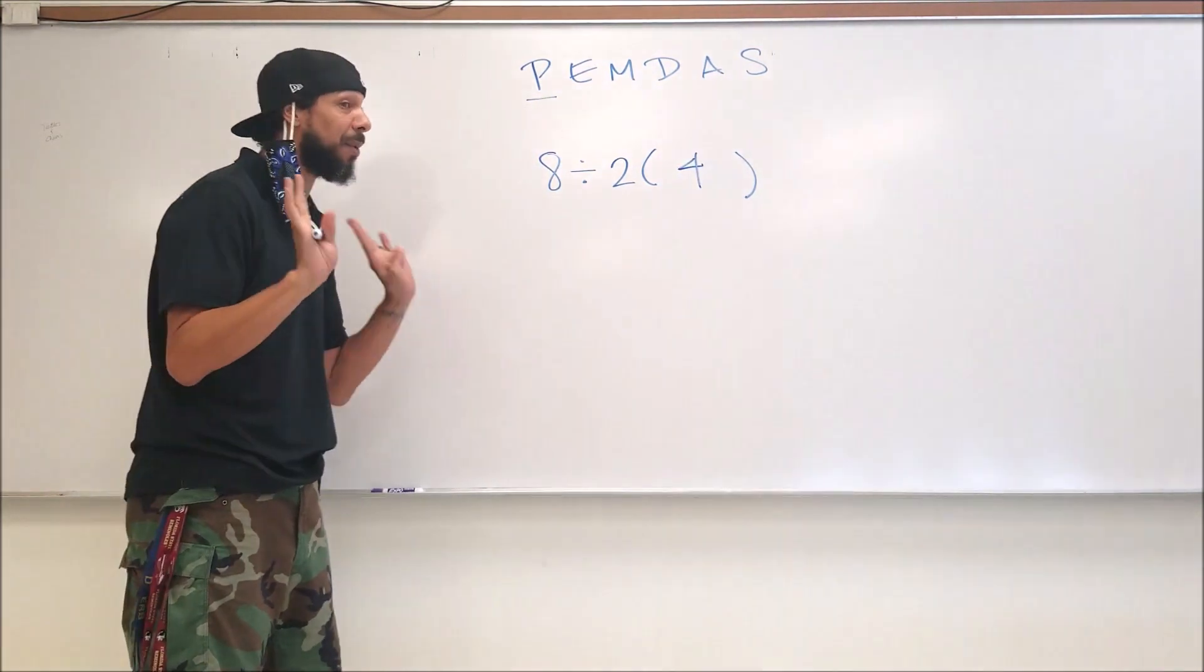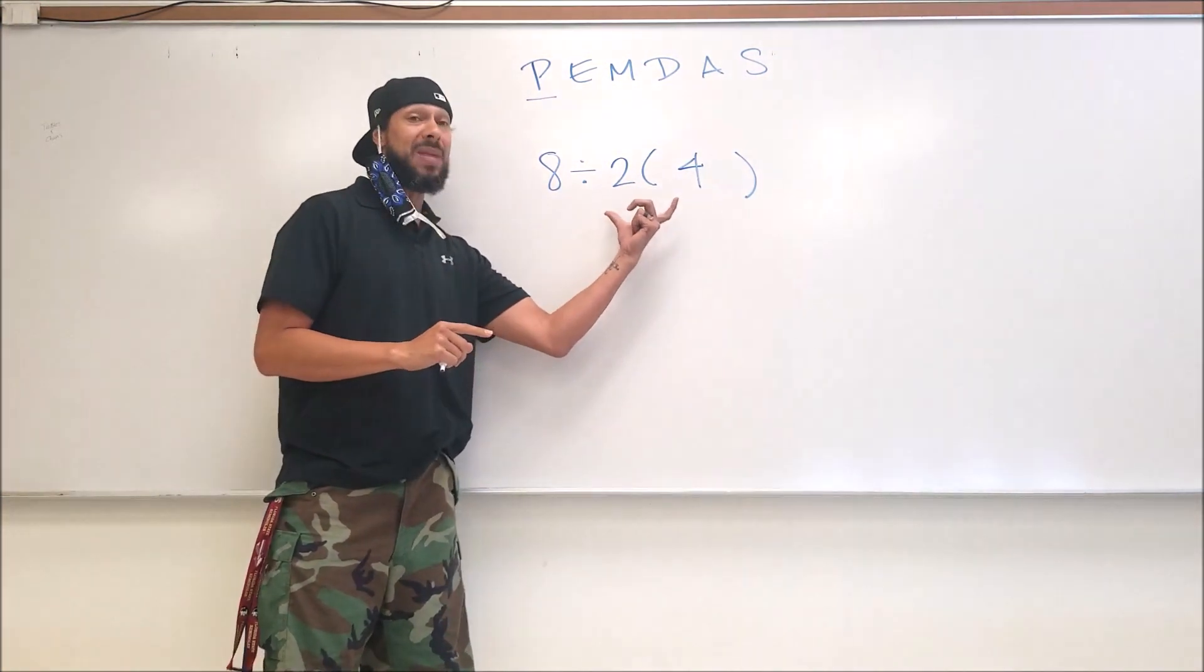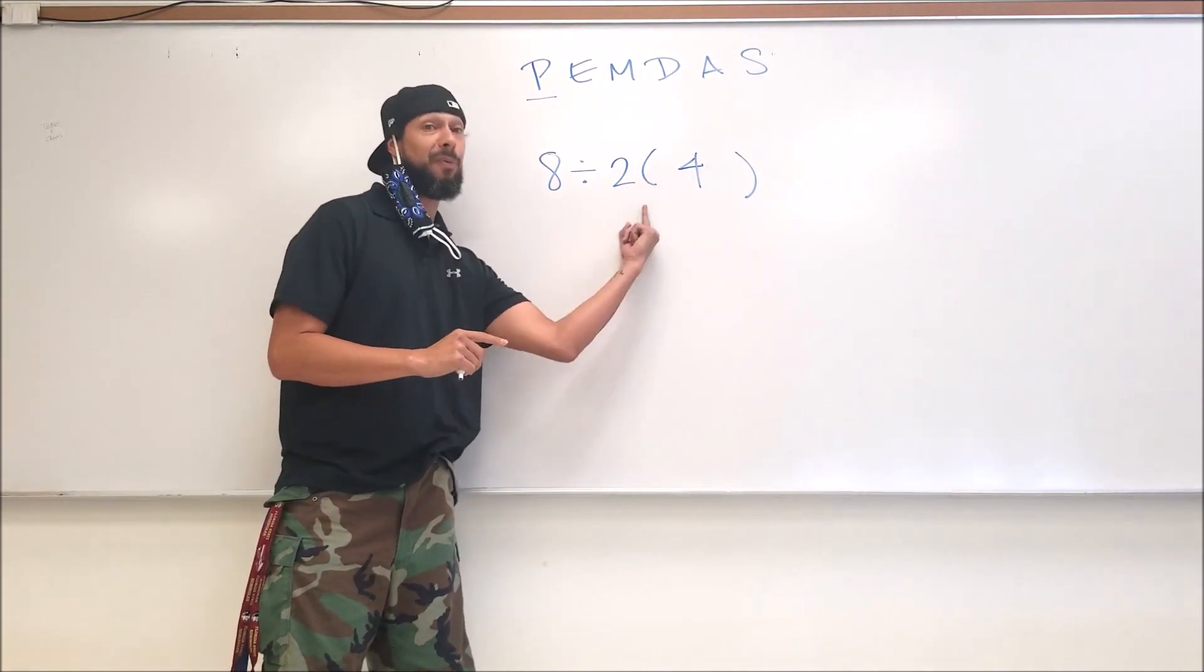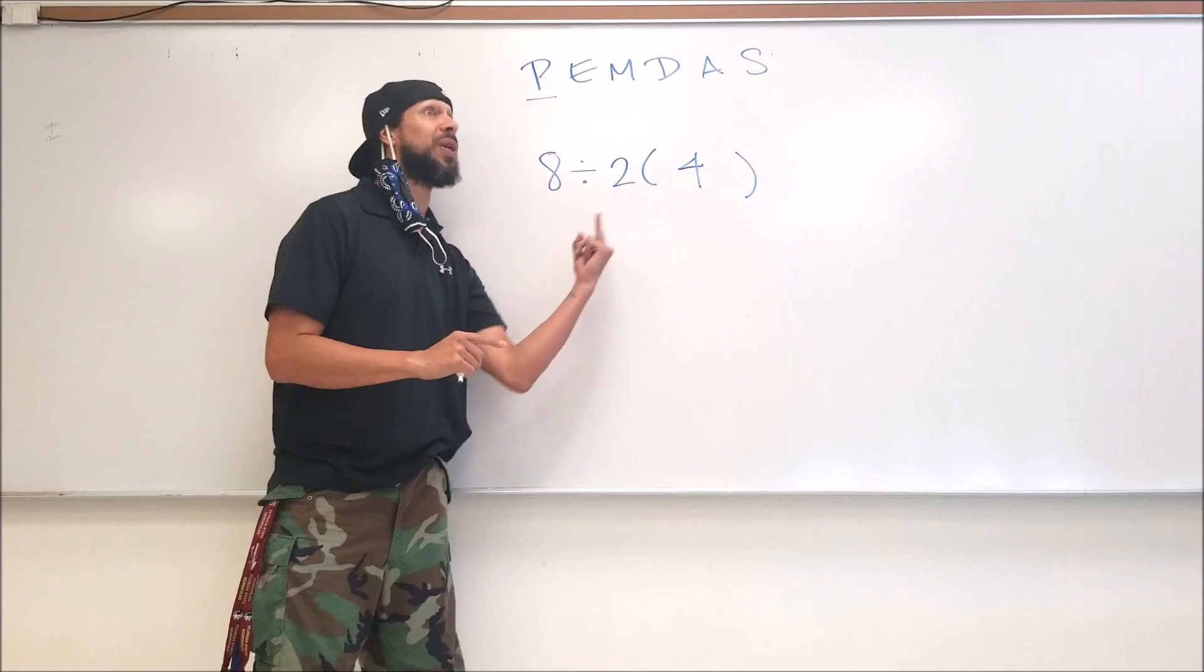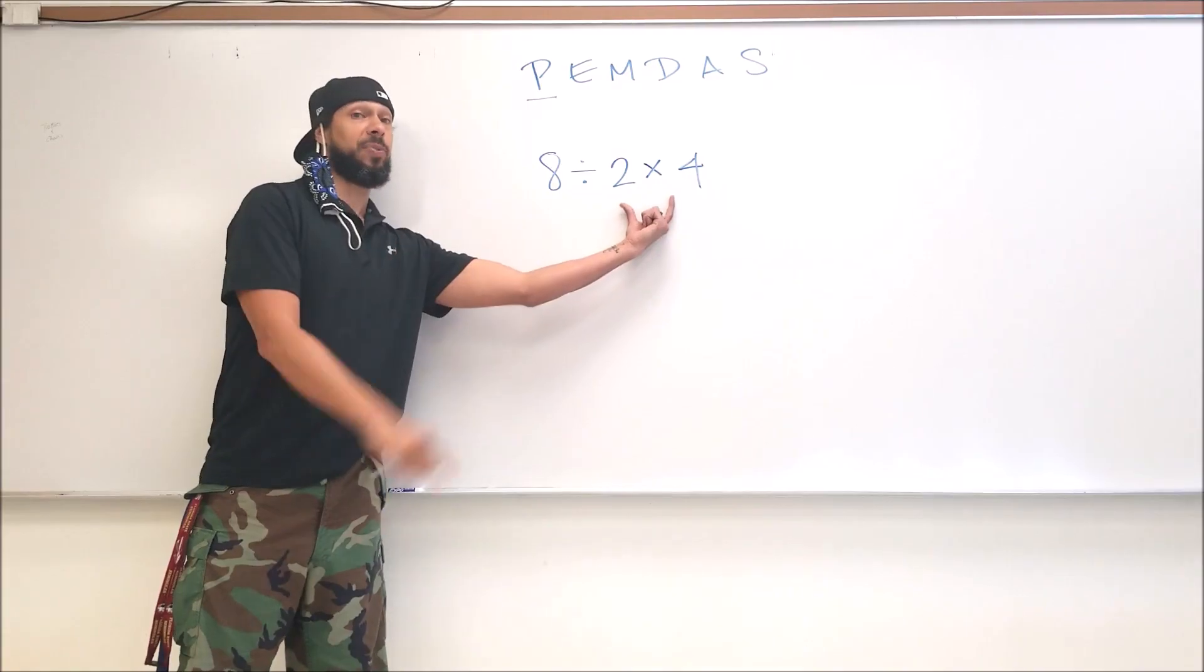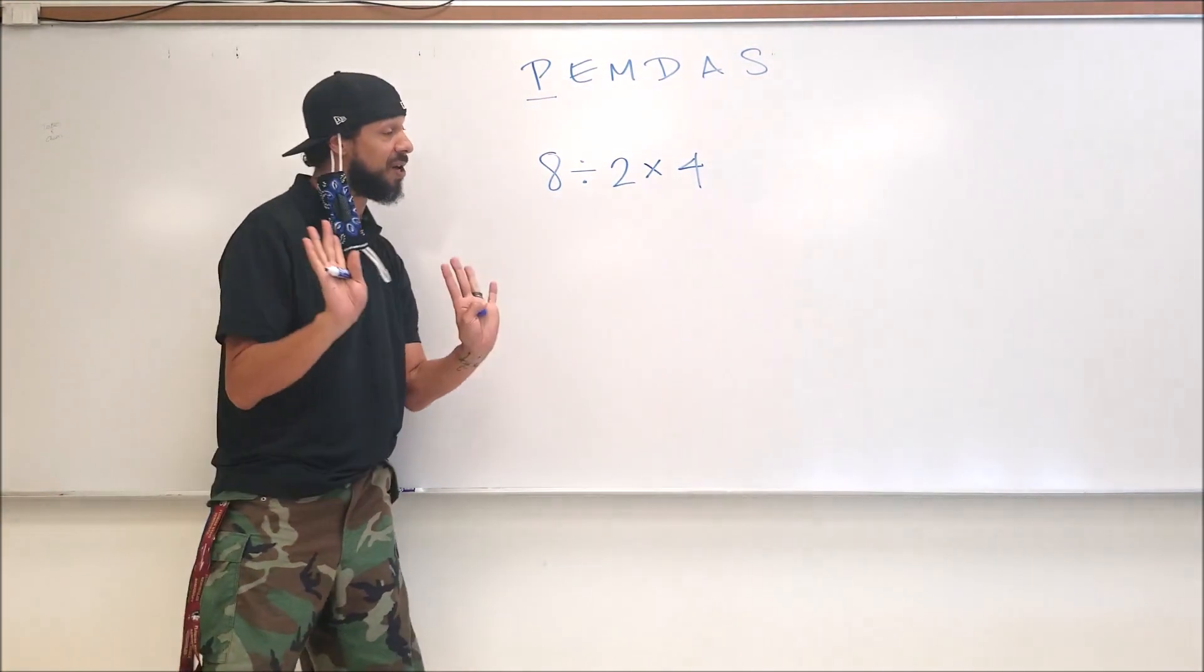And I think we can all agree, I'm pretty sure we can all agree, that these parentheses mean multiplication. This two times this four in parentheses - this operation between the two and four is multiplication. Exactly right. I think we can all agree, correct me if I'm wrong.